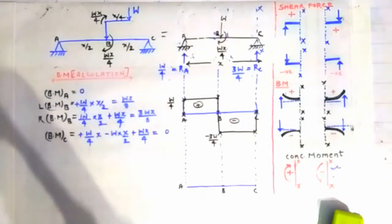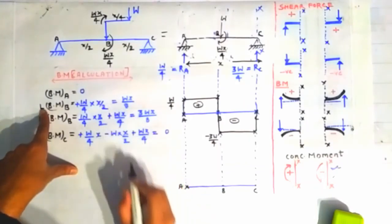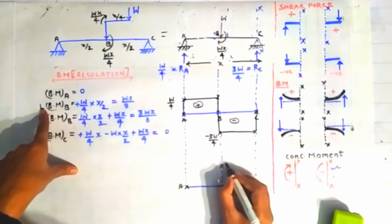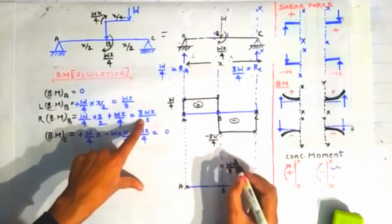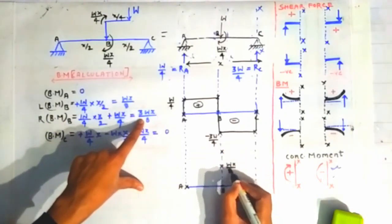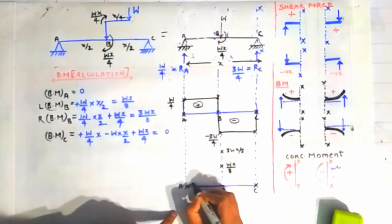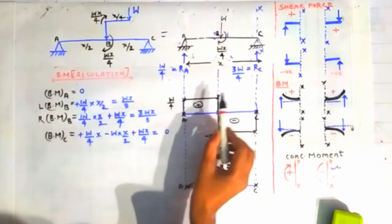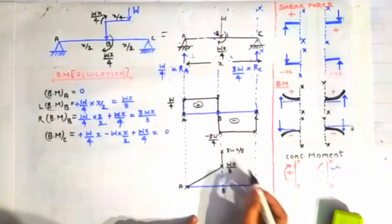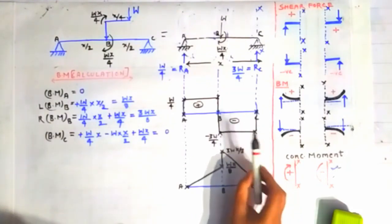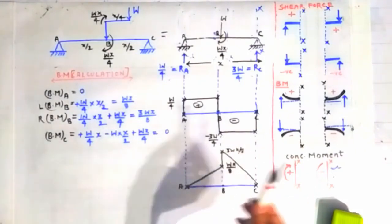Now we draw the bending moment diagram. Bending moment at A is zero; on the left side of B it is Wx/8, plotted above the baseline; on the right side of B it is 3Wx/8, plotted higher above the baseline; and at C it is zero. Joining A to left of B with an inclined straight line, then a vertical jump at B from Wx/8 to 3Wx/8, then joining right of B to C with an inclined line, because the shear force is constant (horizontal) between each pair of points.